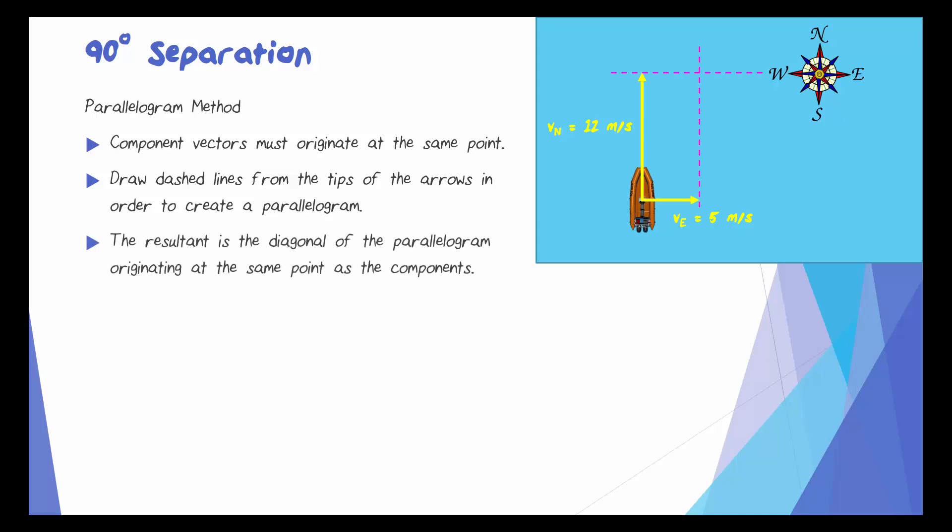Once that's done, the resultant is just the diagonal of the parallelogram that's originating at the same point as the components. So there's our resultant.